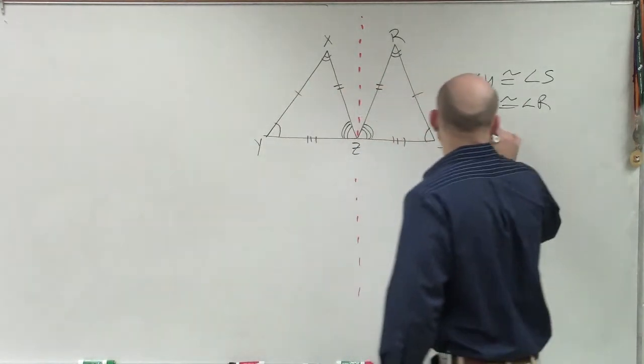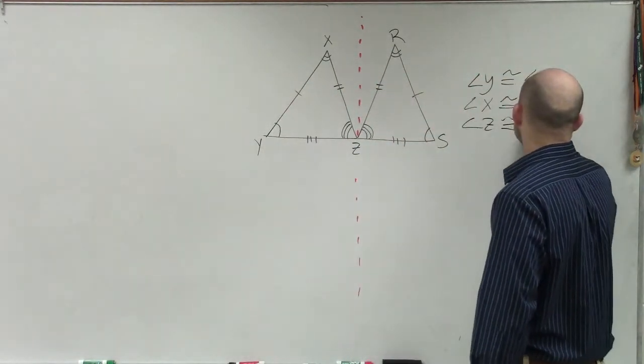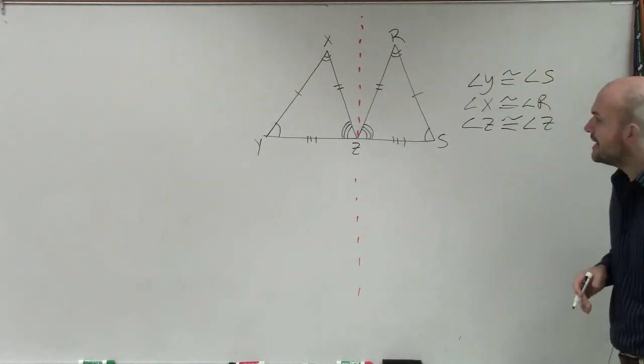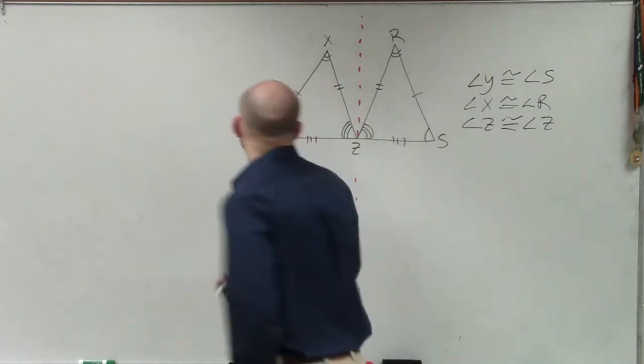Last one, we could say that angle z is congruent to angle z. All right. They both have a point angle z. Then by going to your, so that's your angles,